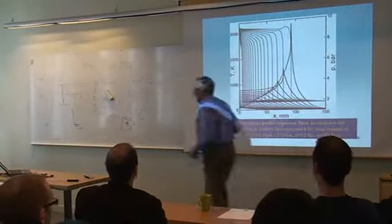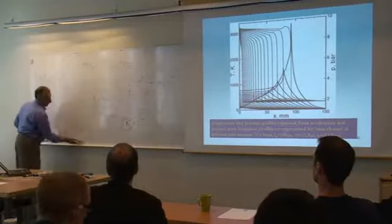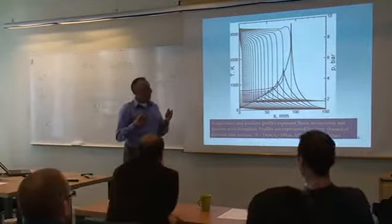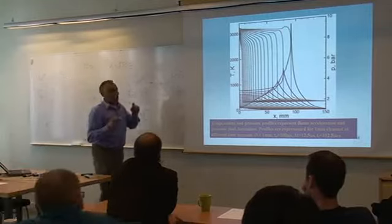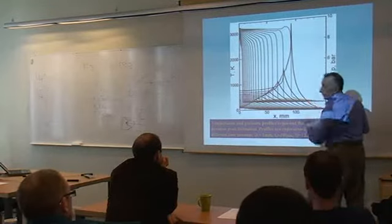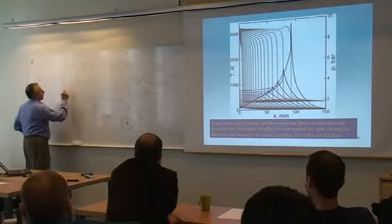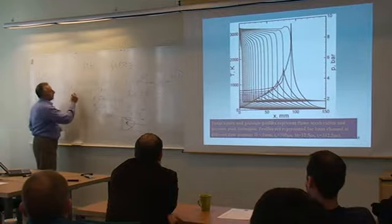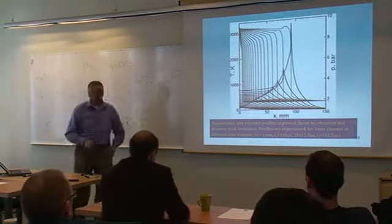The pressure pulse steepens into a strong shock, and the time for transition to detonation should be of the order of the time needed for characteristics to catch each other — one characteristic going from the peak of the pressure, another from the pressure front. The time for intersection of such characteristics is of the order of the flame width divided by sound velocity, which is about one microsecond — as found in numerical simulation.